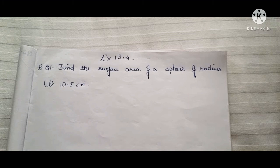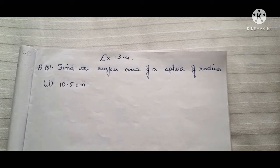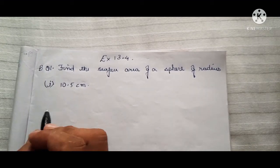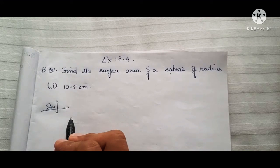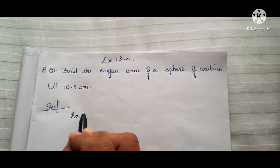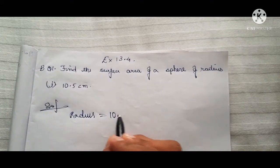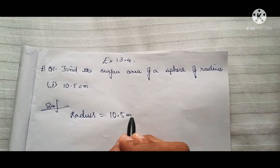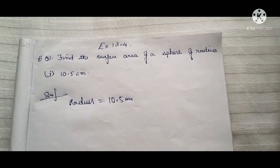Hello students, today we will be doing 13.4 question number one: find the surface area of a sphere of radius 10.5 centimeters. So in this question, the radius is given as 10.5 centimeters, and we are going to find the surface area of a sphere.